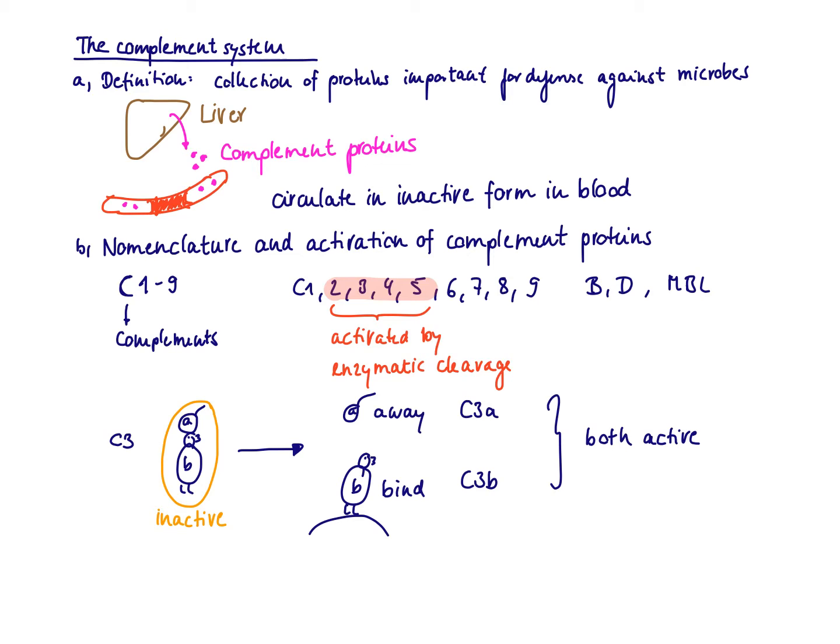As I have already mentioned, the complement proteins are not active when circulating in the blood, but they can get activated and then help clear the infection. Some complement proteins — C2, C3, and C4 belong to those — are activated by enzymatic cleavage. All the others — C1, C6, C7, C8, C9, Big B, Big D, and MBL — are activated by a conformational change.